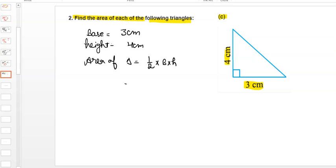Now substitute the value, then half into base is 3 into height is 4. Now simplify this. 2 to the 4, and here is 3 into 2 is equals to 6 cm square.